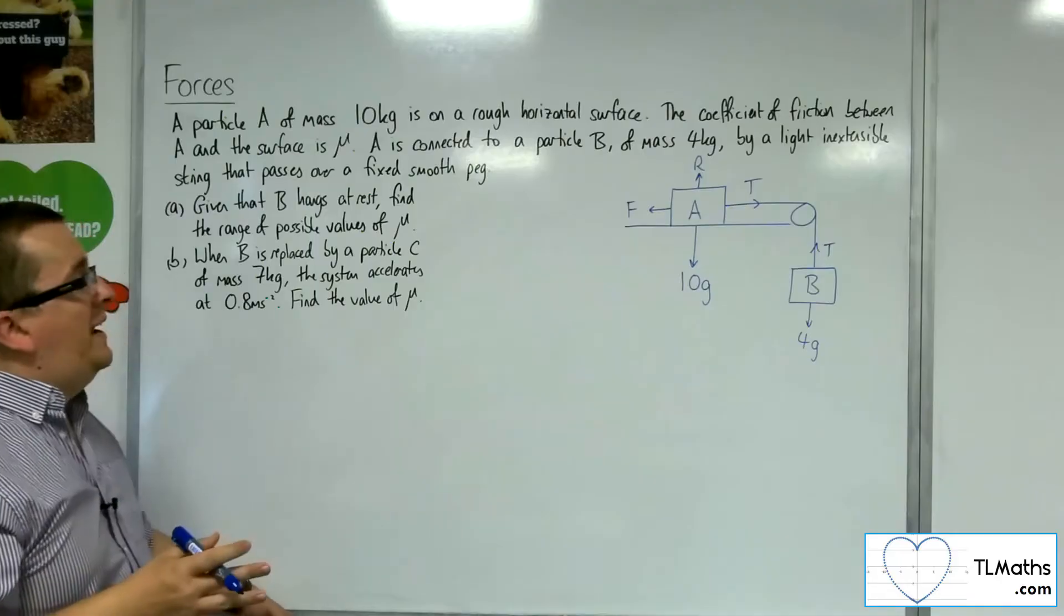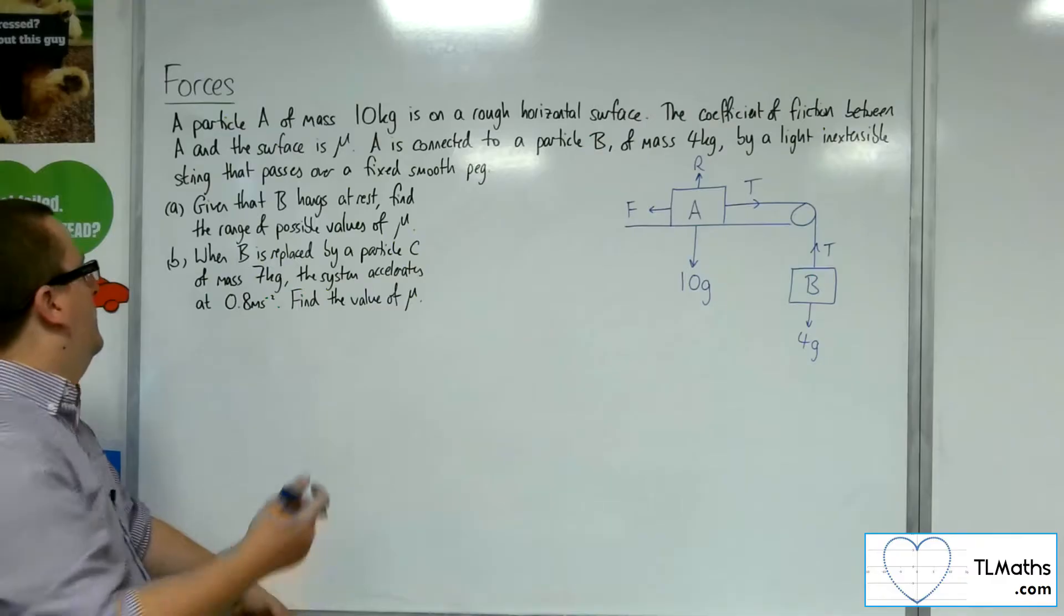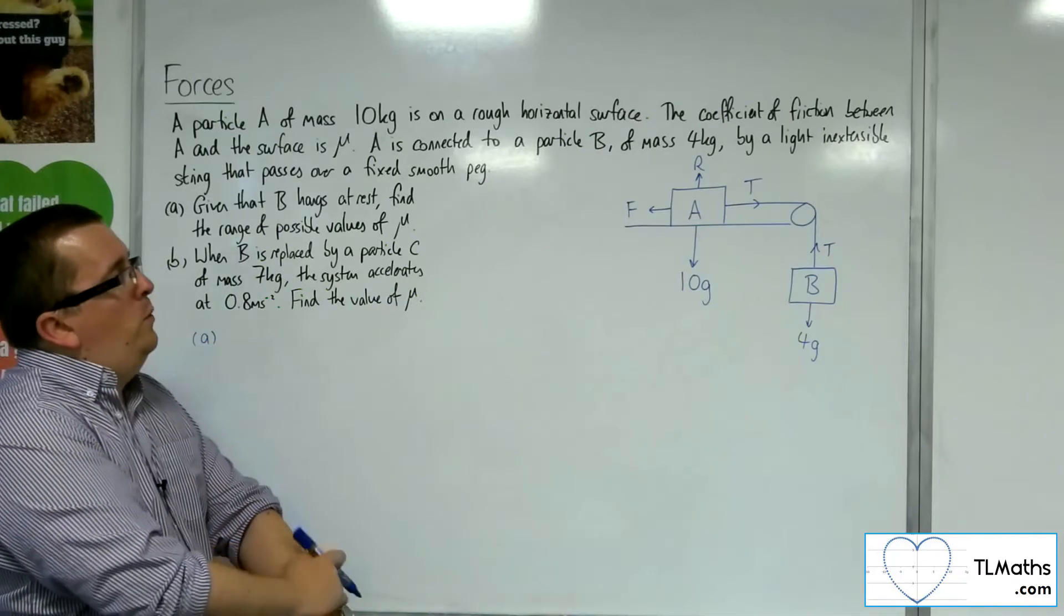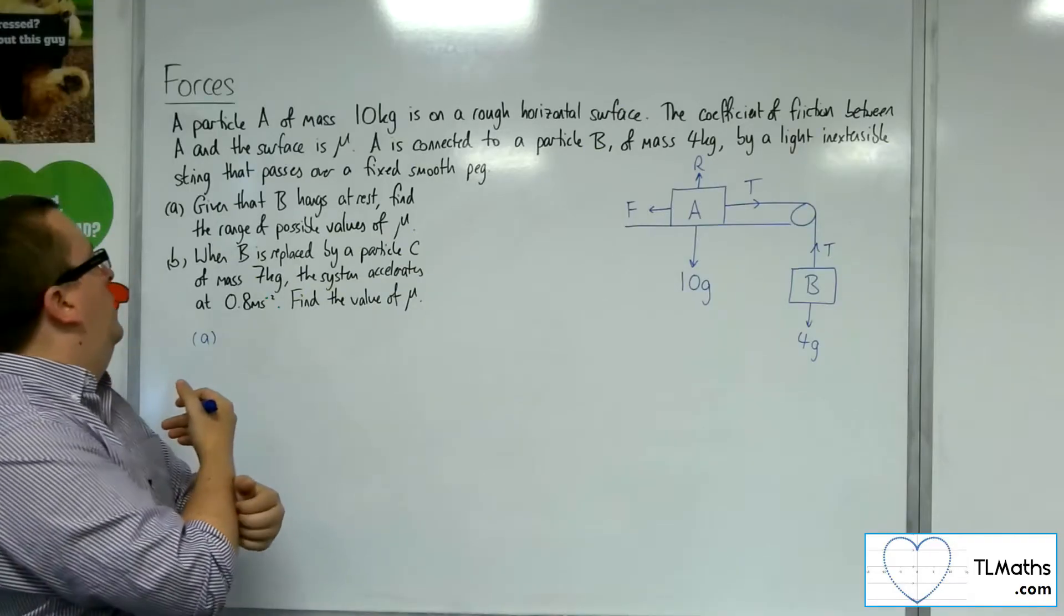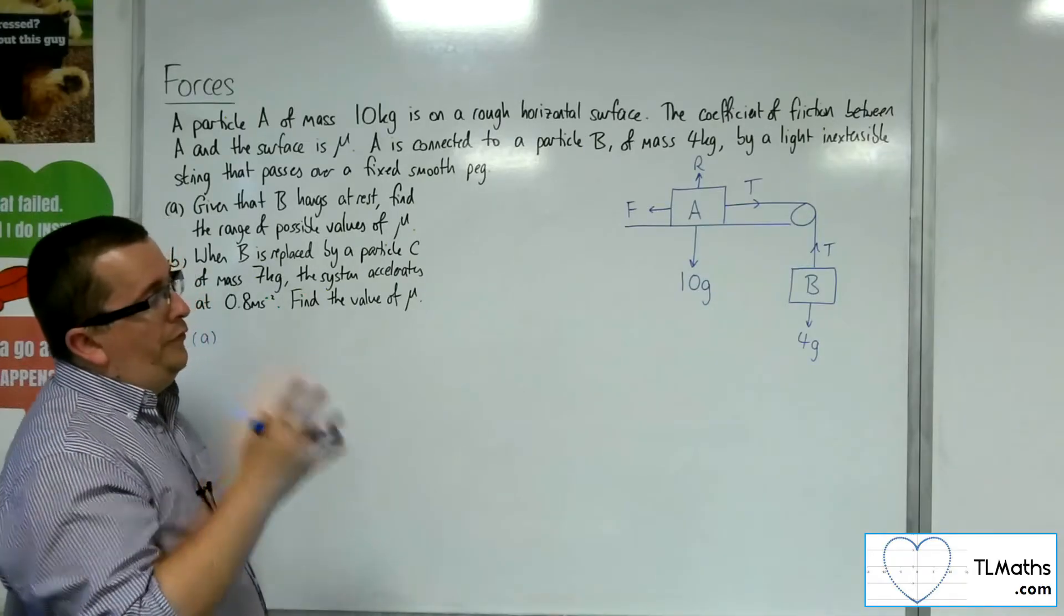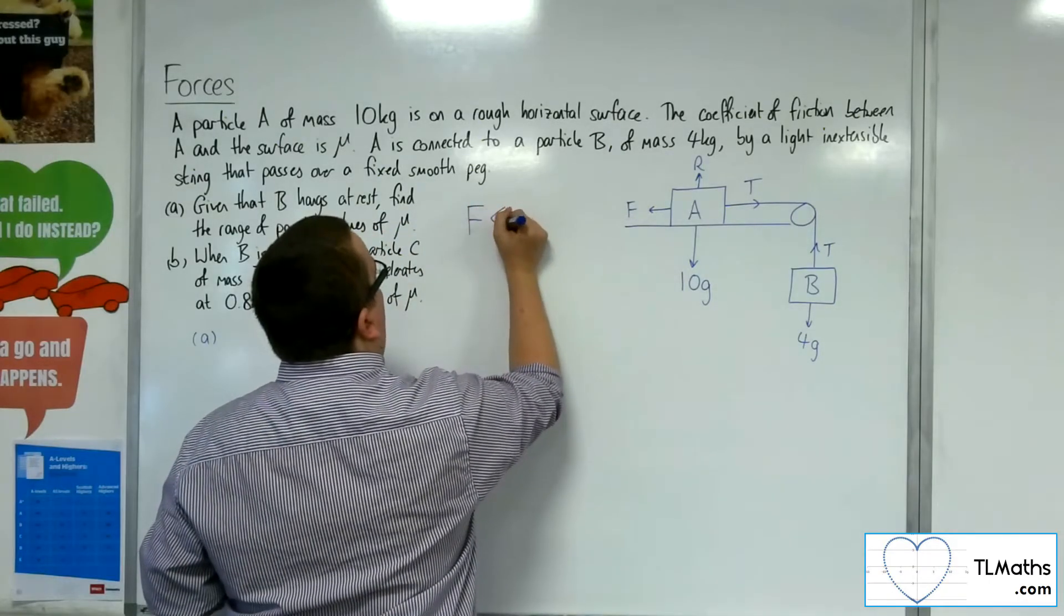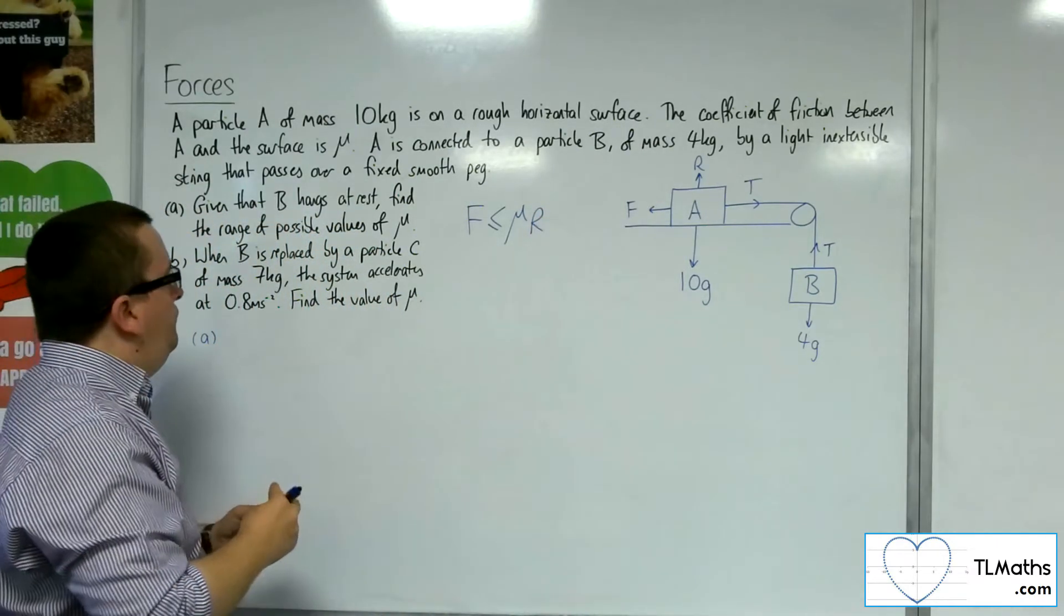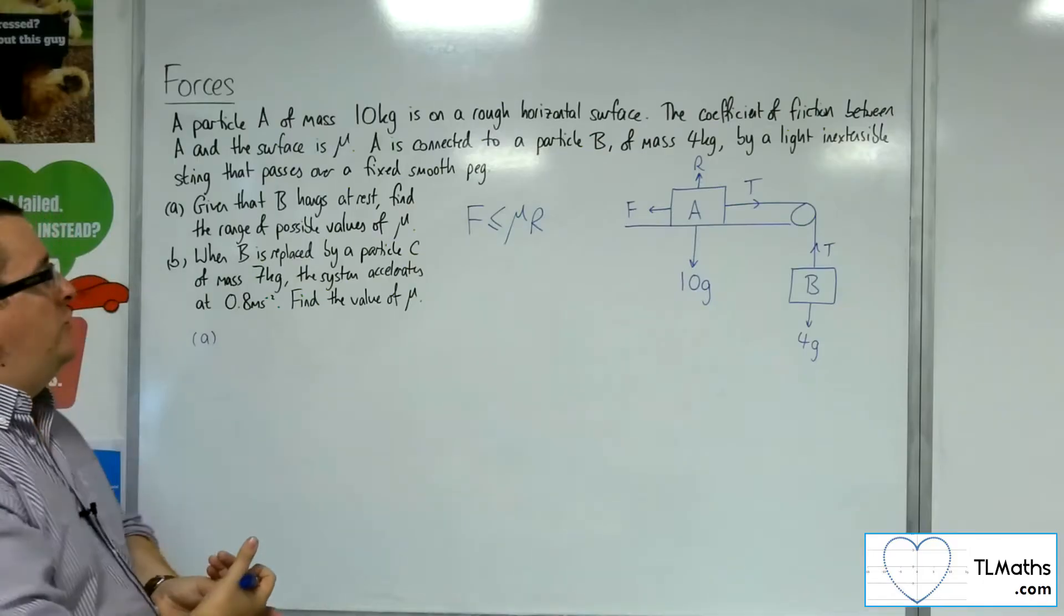Now, as B is hanging at rest, the acceleration is 0, so we'll take that into account. For part A, because it's saying find the range of possible values of mu, and because the system is at rest, we have that F will be less than or equal to mu times R. So we need to find that reaction force, the normal reaction force.